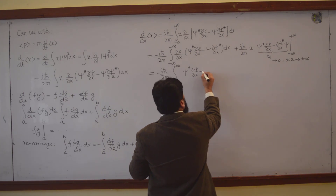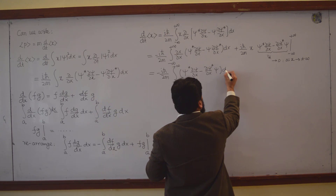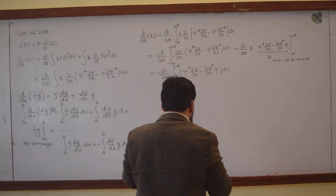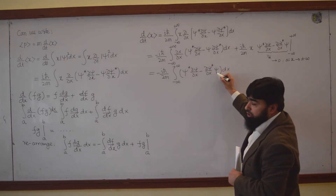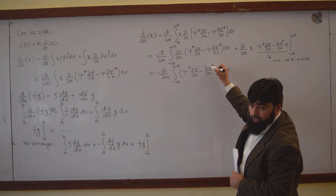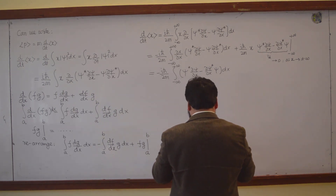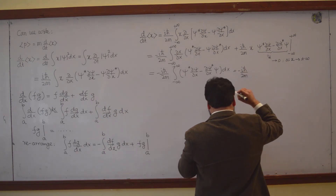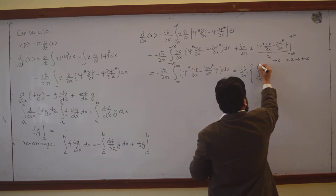...times x minus x conjugate times psi, and dx. This is equal to — now we can further integrate this by parts, because we know this is also a function of x and t, and this is a function of x and t. So they are two terms; you can further integrate them by parts. But let me first write them in this form. Then this is equal to minus iħ over 2m, and integration from minus infinity to plus infinity — I can write the first term...